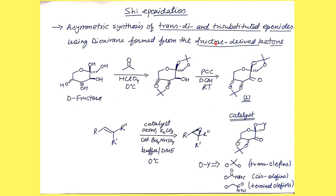Now we are going to look at how this catalyst is synthesized. Starting from D-fructose — this is very important and can be asked in exams — the first step is the acetonide protection, where the 1,3-diol is protected as an acetonide in the presence of HClO₄ as a catalyst. The 1,3-protection occurs here, and the two cis hydroxyl moieties are also protected at the same time.